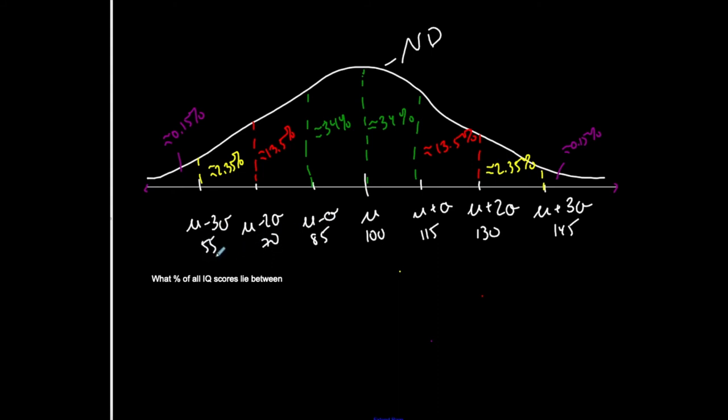So let me ask, what percent of all IQ scores lie between 115 and 130? Well, that's not a difficult case because I already split up all these percentages. So I'm going between 115 and 130. So that's this little space here, approximately 13.5% lie there.